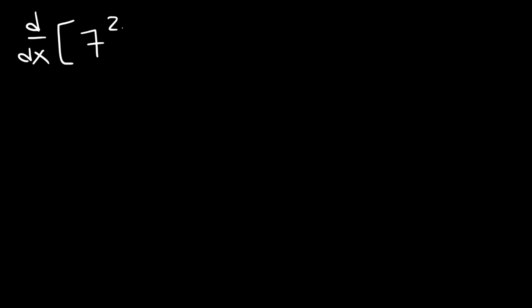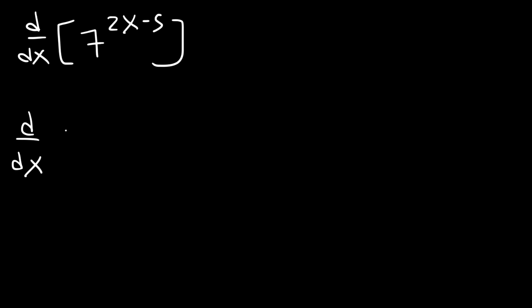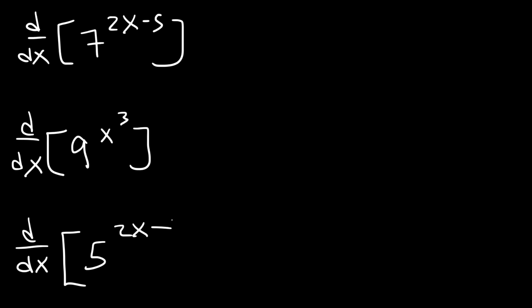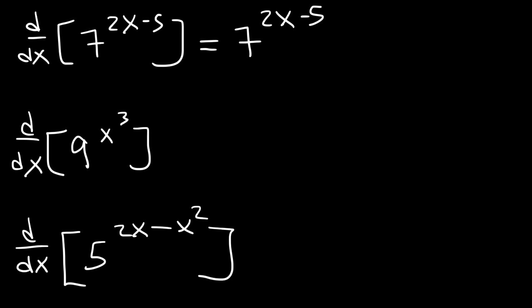Try these three examples. Using that formula, it's going to be a to the u, which stays the same. So a is 7, u is 2x minus 5, and then times u prime — the derivative of 2x minus 5, which is 2 — times ln a, or ln 7. And so that's it for that example.